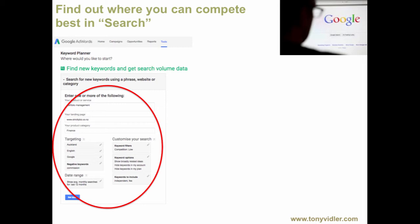Google AdWords does some wonderful analysis on your behalf here. You go into the competition search and it will tell you roughly how many consumers in your area are using those terms and words to look for someone like you, and whether competitors are using them a lot — whether it's really congested or whether there's relatively little traffic at all.